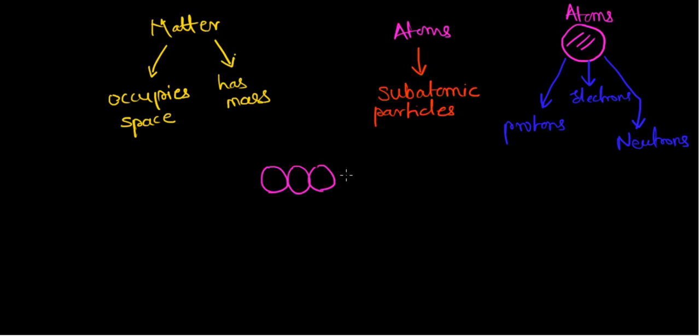everything in the world is in the form of atoms combined together. When atoms combine, they form a group of atoms, and this group of atoms is called molecules. Matter is made up of atoms, and groupings of atoms are called molecules.